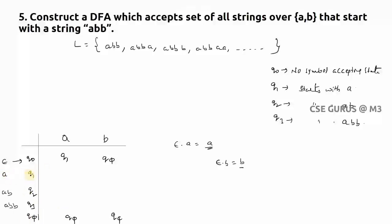From Q1 on input A: we already have A, appending A gives AA — is there a state starting with AA? No, so we write Q_pi. From Q1 on input B: we have A, appending B gives AB — is there a state starting with AB? Yes, Q2. From Q2 on input A: we have AB, appending A gives ABA — is there a state starting with ABA? No, so we write Q_pi.